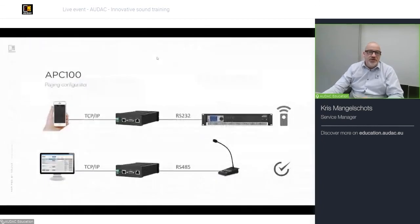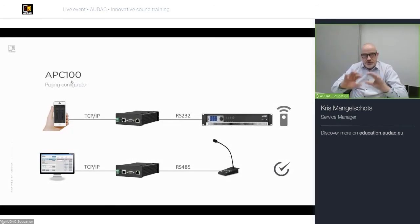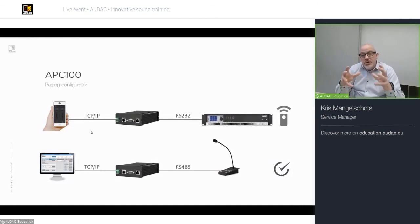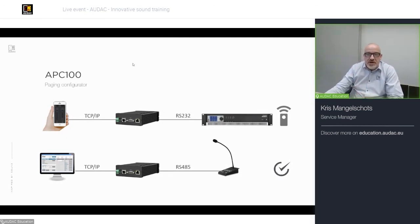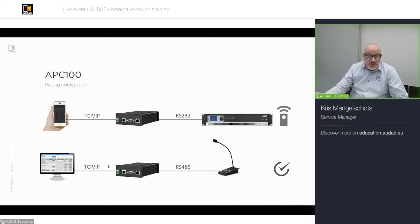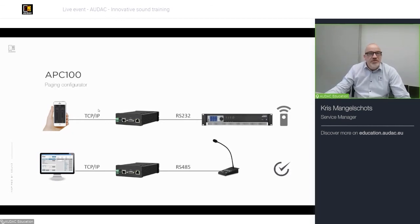The APC100 can act as a bridge between ODAC System Manager and an APM table for full configuration, or as a bridge between an IP command and an RS-232 serial command — for example, to control an SMQ or PMQ amplifier via ODAC Touch using serial commands. It can also be used as a programming tool for APM tables and as a clock source for timed events.